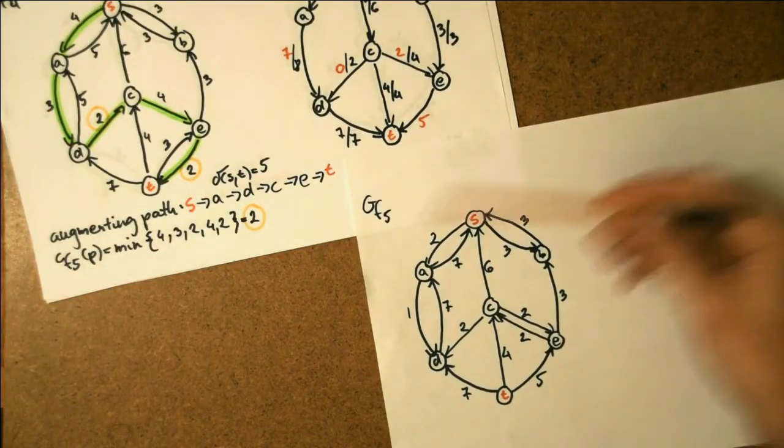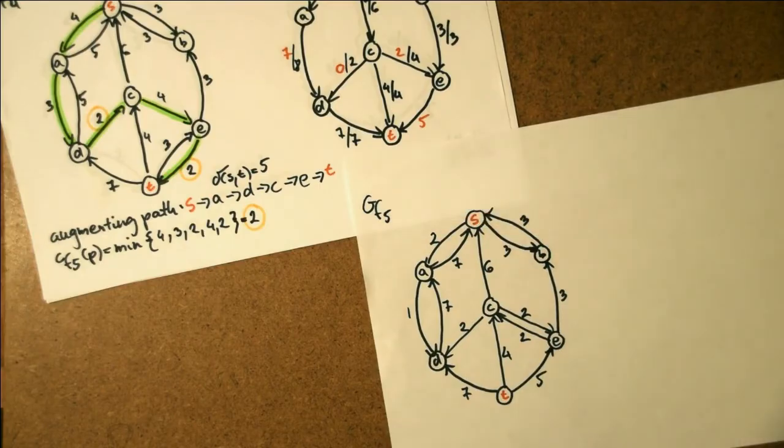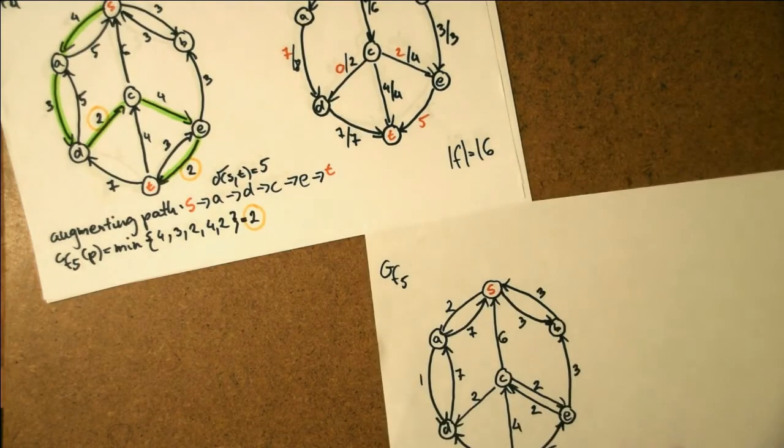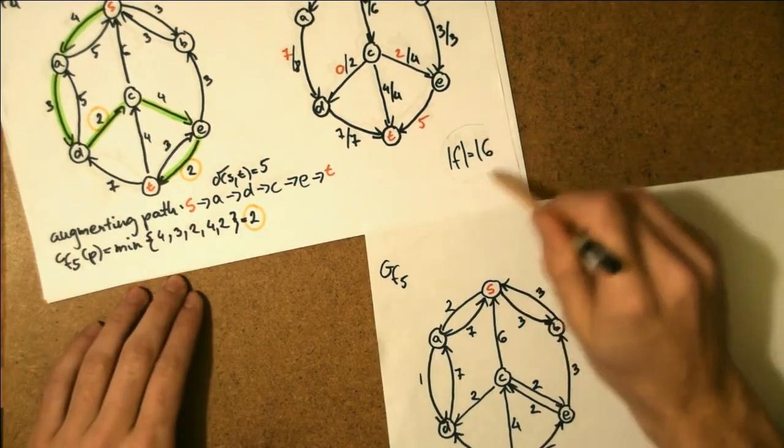We see that there is actually now flow coming from S through C through E to T, although we never use this as an augmenting path. And since there is no more augmenting paths in GF5, we have now solved the problem and the maximum flow is actually 16.